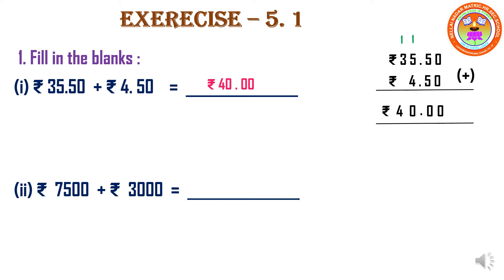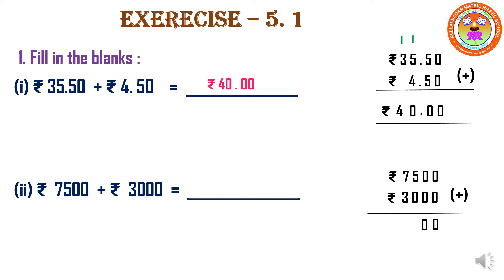Next one: we have to add Rs. 7,500 plus Rs. 3,000. So let us add the amounts. 0 plus 0 is 0, again 0 plus 0 is 0, 5 plus 0 is 5, and 7 plus 3 is 10. So when we add 7,500 plus 3,000, the answer is Rs. 10,500.